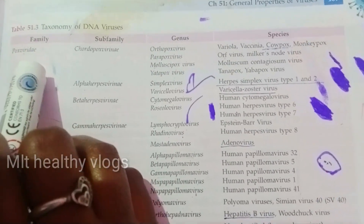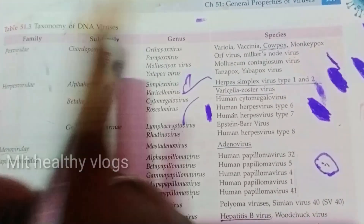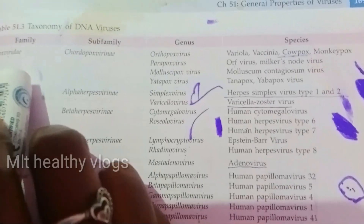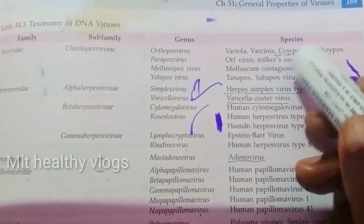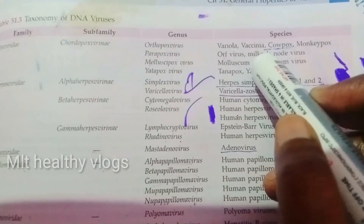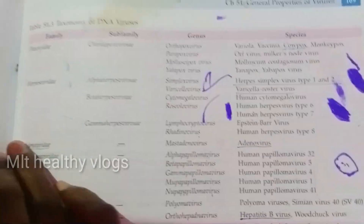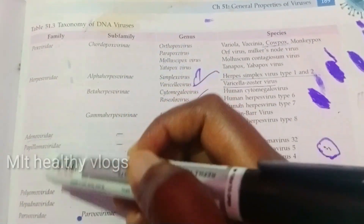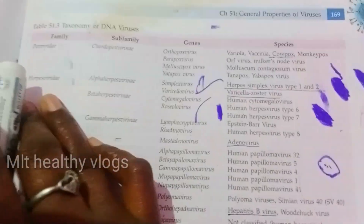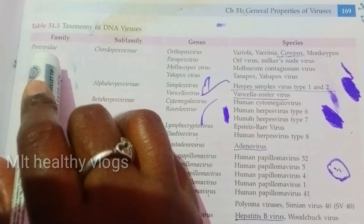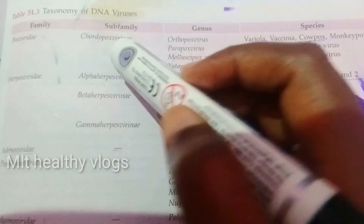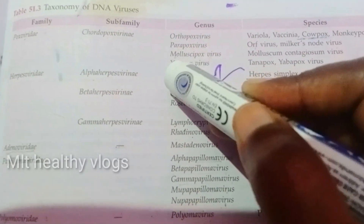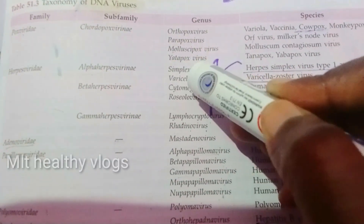Let's choose Poxviridae as an example. Poxviridae is the Family. The Subfamily is Chordopoxviridae. The Genera are: Orthopoxvirus, Parapoxvirus, Molluscipoxvirus, and Yatapoxvirus. The Species level comes next.